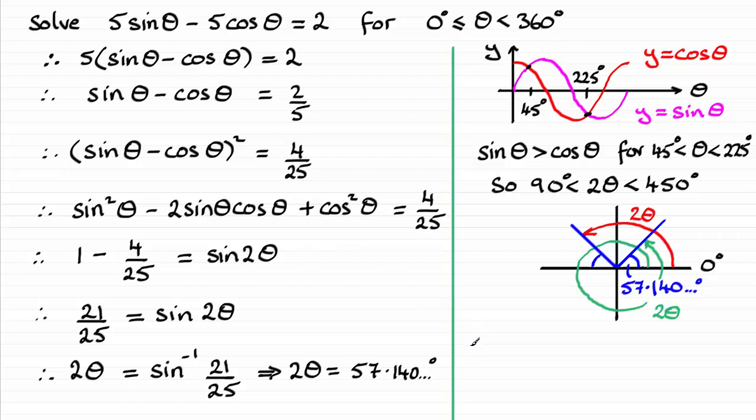Well, from that point of view, we therefore have that 2θ must be equal to, well, for the red one, it's going to be 180° minus the 57.140°, and that's going to be 122.85 and so on degrees, and I'll just mark that in as the red one.